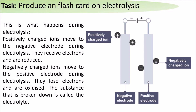This is what happens during electrolysis. Positively charged ions move to the negative electrode, where they receive electrons and are reduced. Negatively charged ions move towards the positive electrode, where they lose electrons and are oxidized.